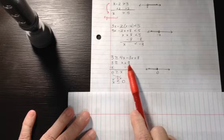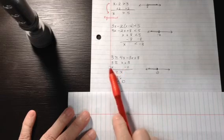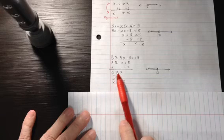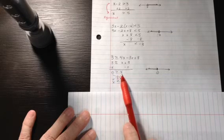And then we're going to get rid of our 3 by subtracting 3 from both sides. 3 minus 3 is 0 is greater than or equal to x.